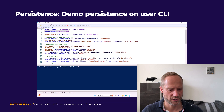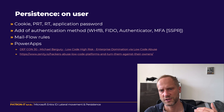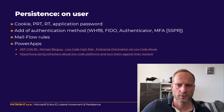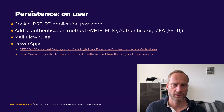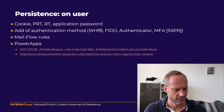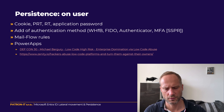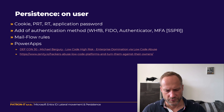For persistence at the user level: cookies, PRT, refresh tokens, application passwords, added authentication methods, mail flow rules, or Power Apps. I don't have experience with Power Apps personally, but I've read some articles — it's a huge functionality. Some APT groups have already used it in the wild, and one compromised company knew they were compromised but it took them about seven months to realize how the attackers were returning to their environment.